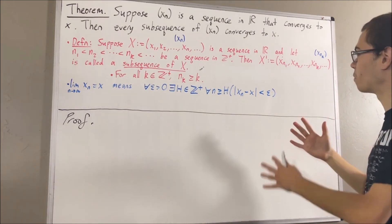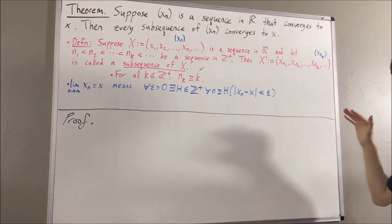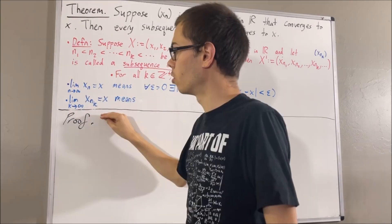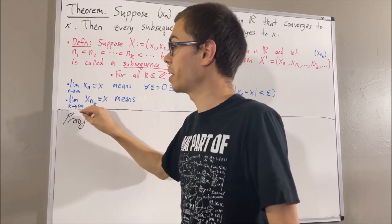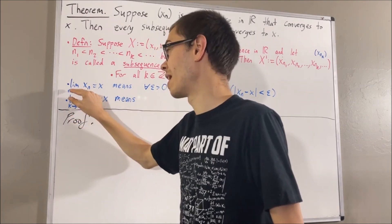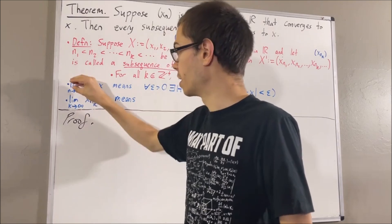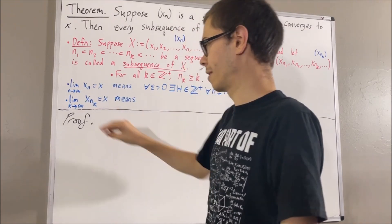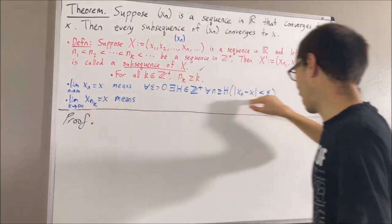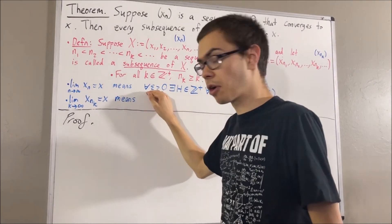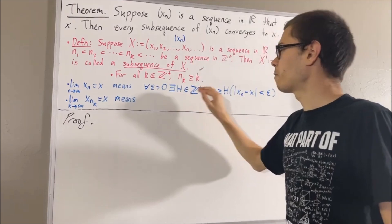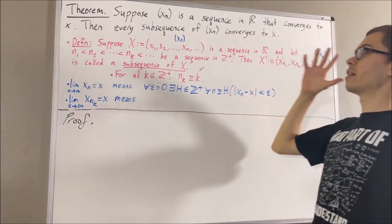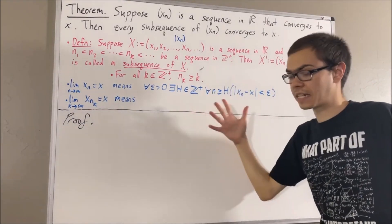But then, what does it mean for xnk to converge to x? Notice, in this case, I'm writing the limit as k approaches infinity rather than as n approaches infinity. This is because n is the variable in the first limit, and k is the variable in the second. Similarly, it means: for every epsilon greater than zero, there exists a positive integer h, such that for all positive integers k greater than or equal to h, the absolute value of xnk minus x is less than epsilon.